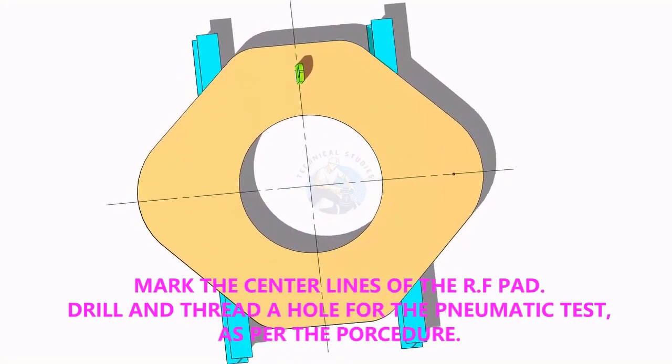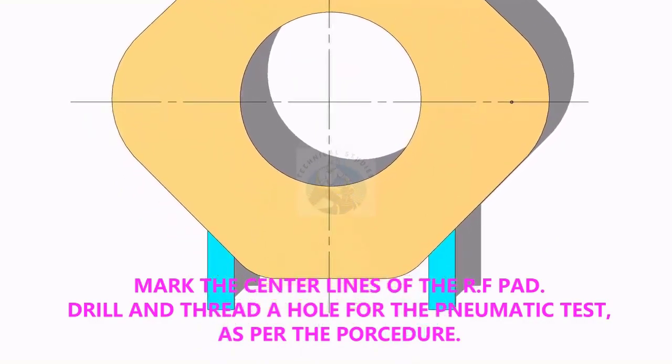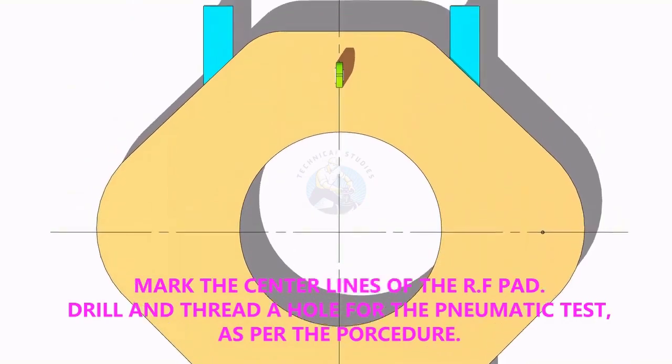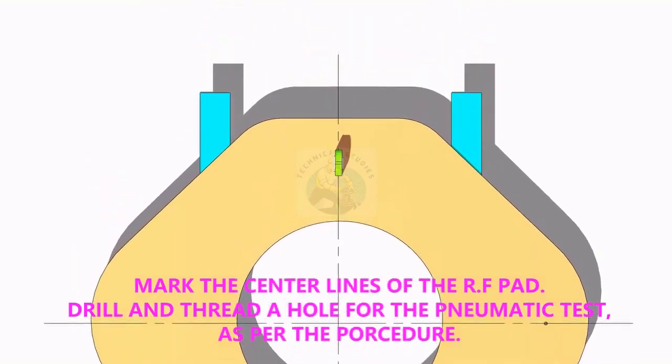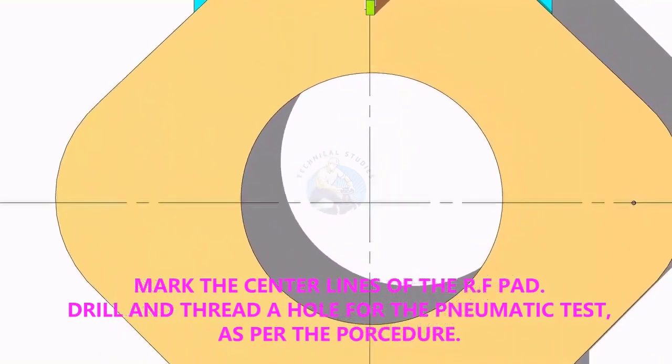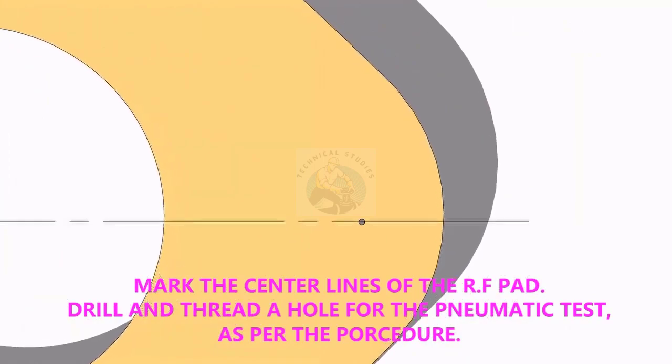Mark the center lines of the reinforcement pad. Don't forget to drill and tap the telltale hole. If necessary, TAC weld a lifting hook on the pad as shown.